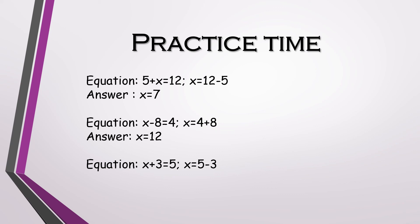Now let's go to our last equation: x plus 3 equals to 5. To simplify this equation, we subtract 3 from both sides. x plus 3 and minus 3 cancel each other, which leaves x on one side, and 5 minus 3 equals to 2. This gives us the answer x equals to 2.